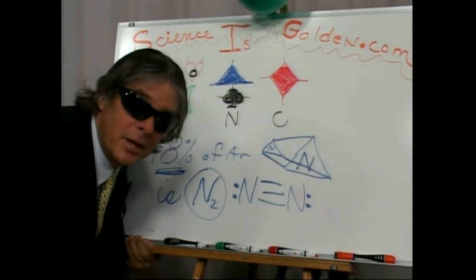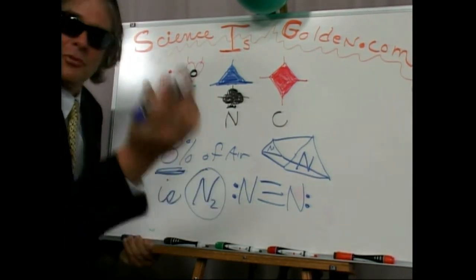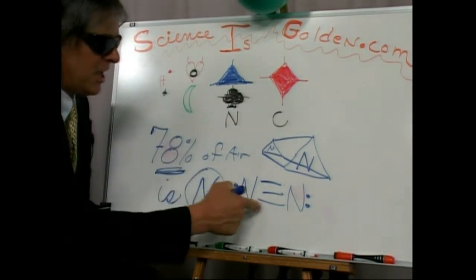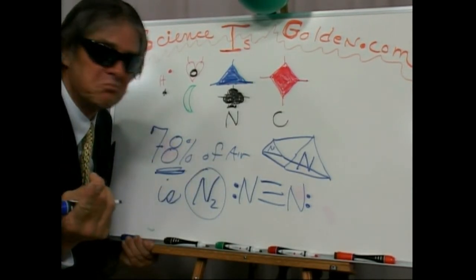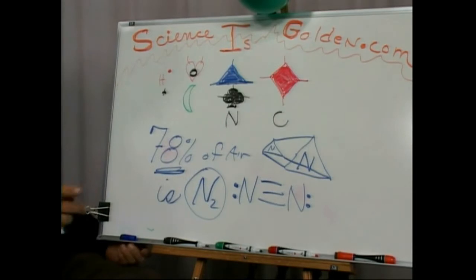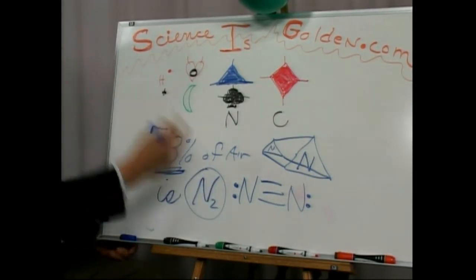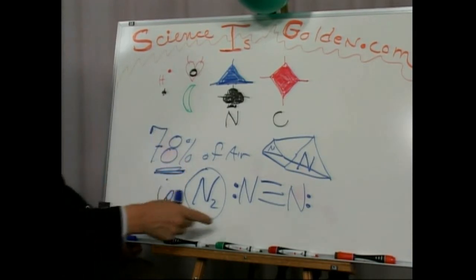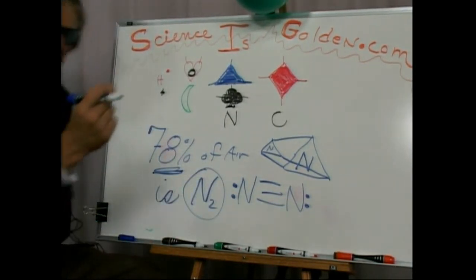So think of all the breathing you do, taking a deep breath. Eight-tenths roughly of that is nitrogen, N2 with a triple bond. So what do you think it does when it goes into your lungs? Nothing. Doesn't react at all. What your lungs are trying to do is get the O2 in and the CO2 out. So this kind of insulates it, that things don't instantaneously combust.